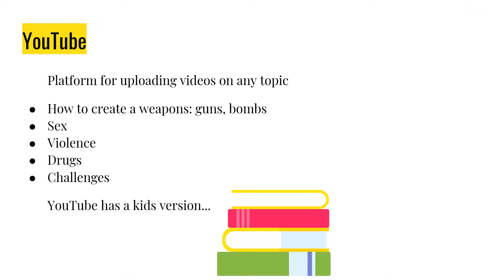YouTube is a place where people can upload videos. To a kid, it's like the biggest playground in the world — whatever comes to their mind, they can find out how to do on YouTube. They can learn how to make guns, bombs, anything you can think of. They can learn about sex, violence, drugs, and challenges. All these things exist on YouTube and are at a child's fingertips. Yes, YouTube has a kid version, but there are still ways for a child to access the regular version of YouTube.